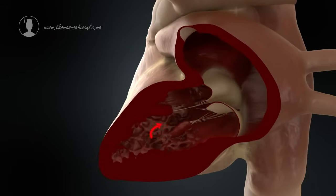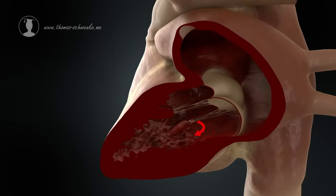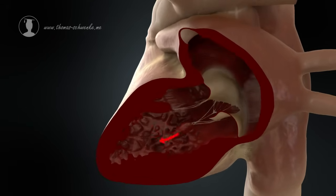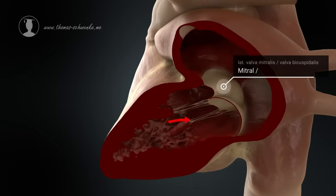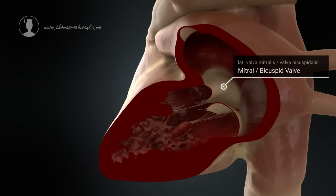The muscles of the left ventricle then contract. As in the right ventricle, fibrous cords and muscles prevent the leaflets of the valve from being pushed into the atrium.